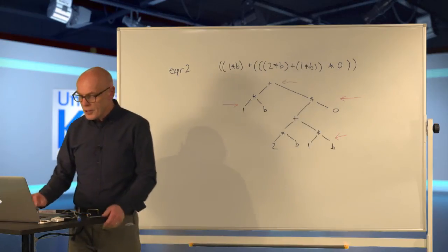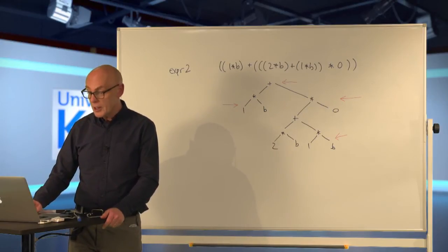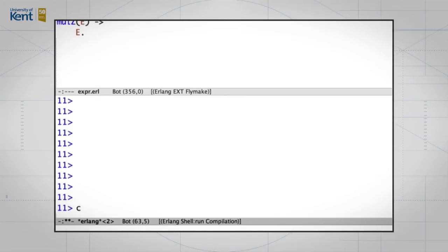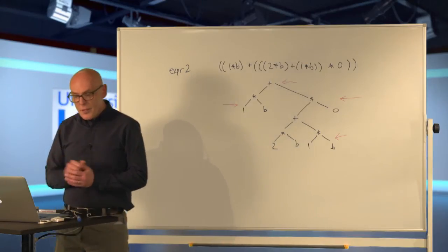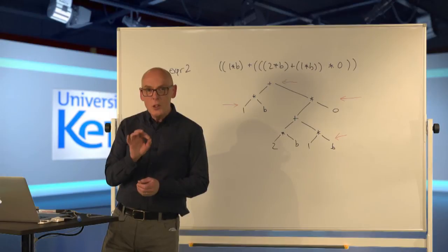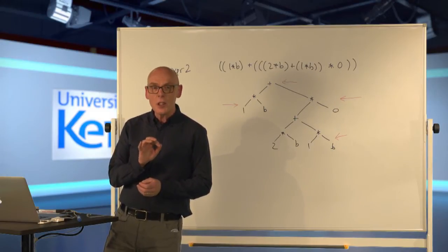So let's have a look at what we've got: we've got our three functions — zero_add, mul_o, and mul_z. Let's compile those, make sure they compile okay. And they do. So what we have here are three functions which we can use to simplify very specific expressions.